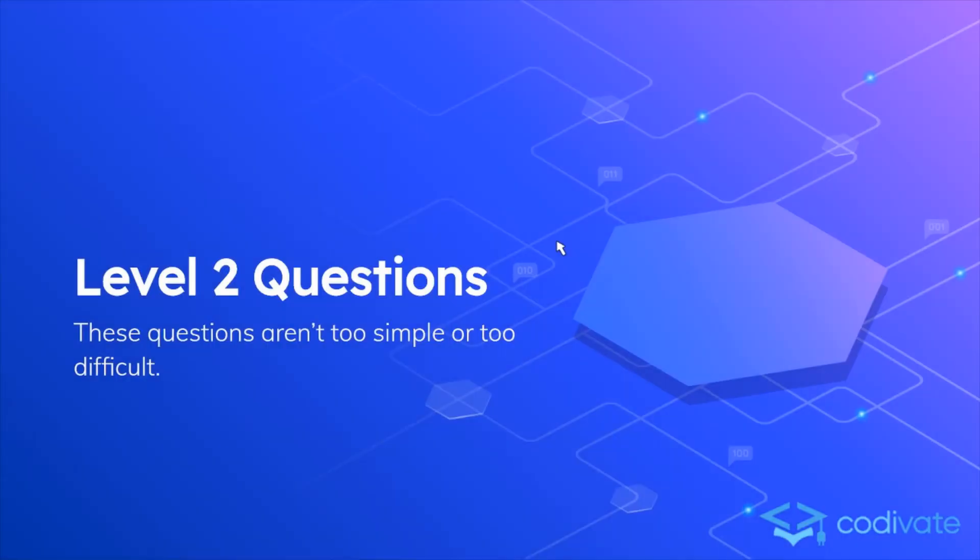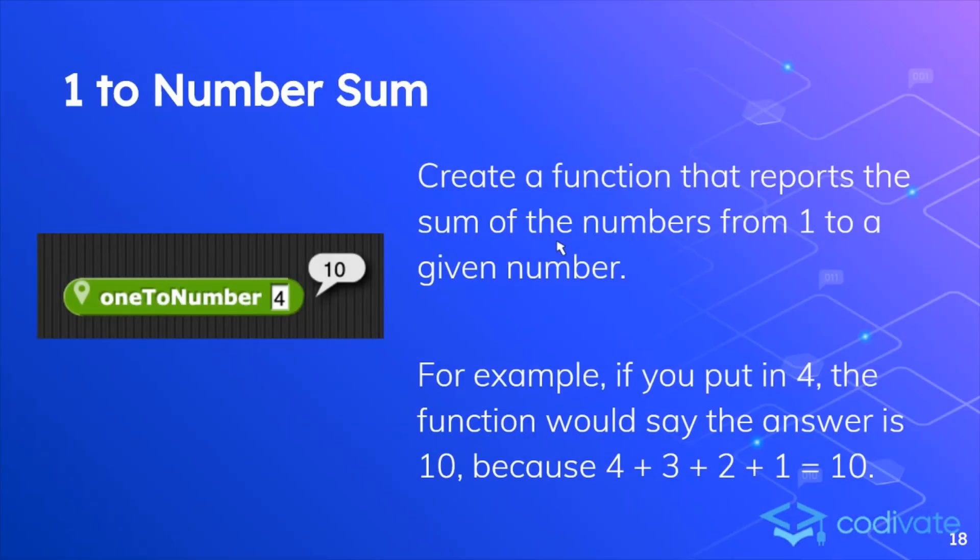Level 2 questions. These questions should be of medium difficulty. 1 to number sum. Create a function that reports the sum of the numbers from 1 to a given number. For example, if you put in 4, the function would say that the answer is 10 because 4 plus 3 plus 2 plus 1 equals 10.